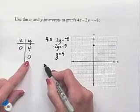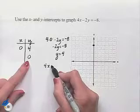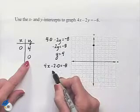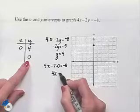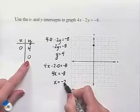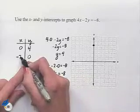Next we're going to substitute a value of 0 for y. We'd have 4 times x minus 2 times 0 equals negative 8. We'll evaluate: 4x equals negative 8. Divide by 4 on both sides of the equation and come up with x equals negative 2.